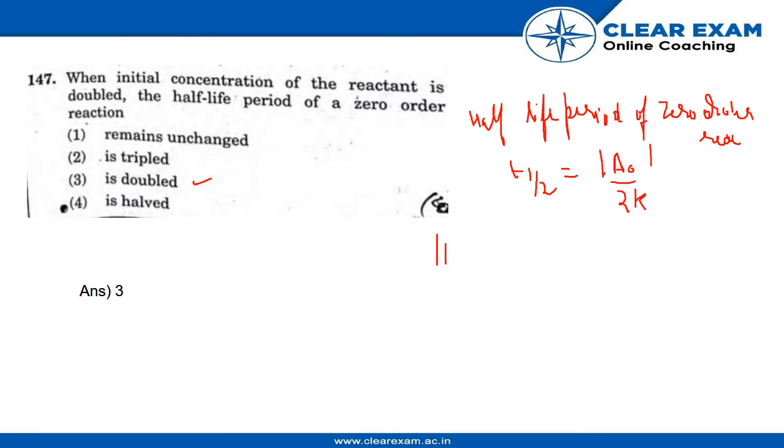The initial concentration of the reactant is doubled. Hence we can say it is twice of A₀. Let us take this as equation 1, and the t1/2 dash for the doubled concentration